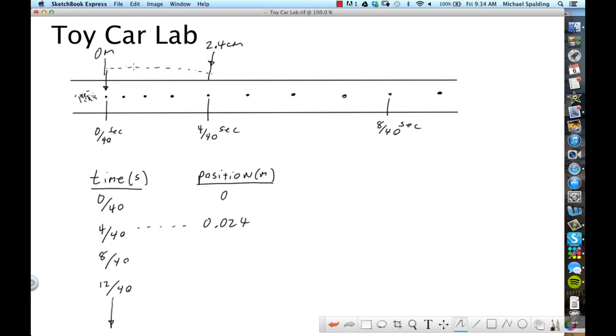Okay, then you're going to go to 8/40ths. Again, measuring from the 0, right? Measuring from the 0 meter position. So this is going to be something bigger than 2.4. So let's say you find out it's 6.3 centimeters. So then you're going to record that as 0.063 meters.